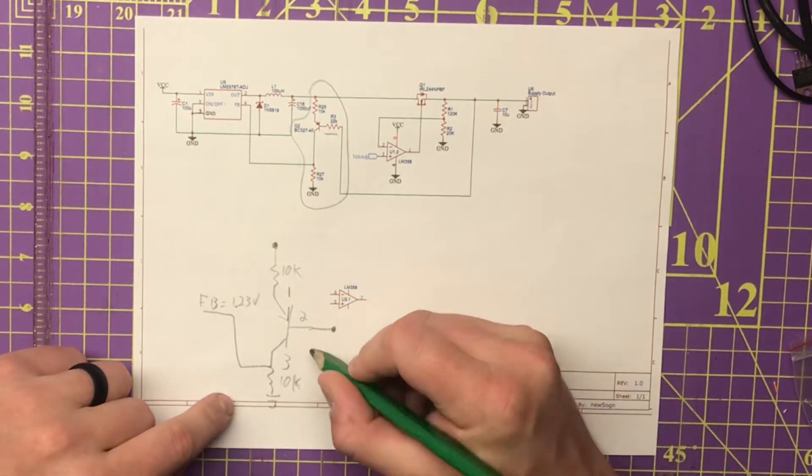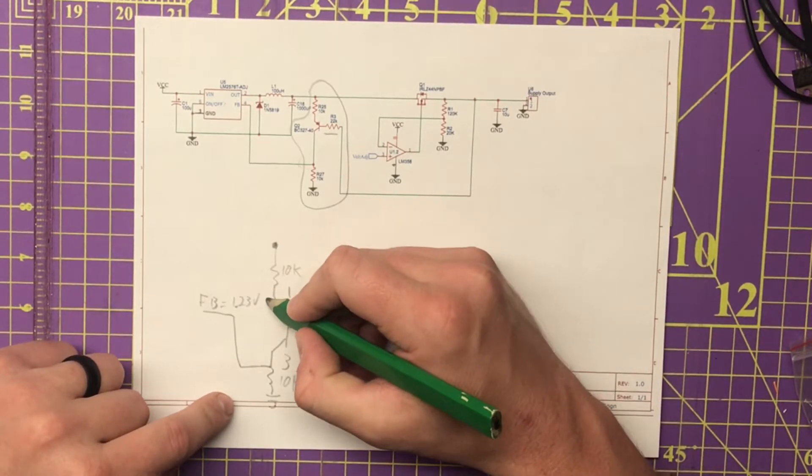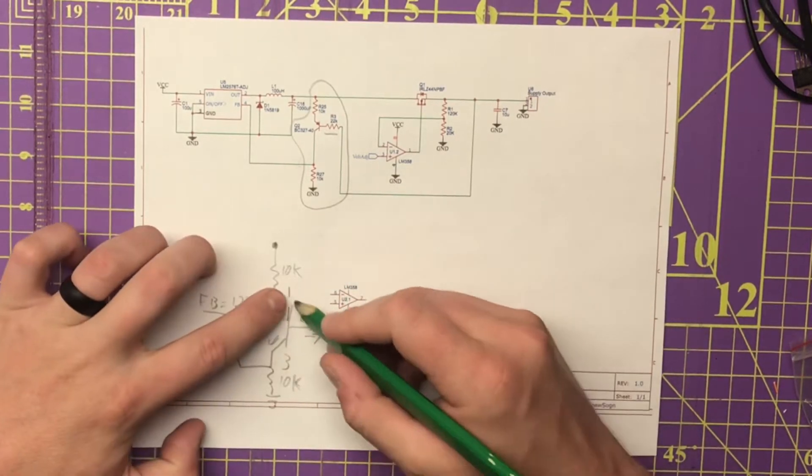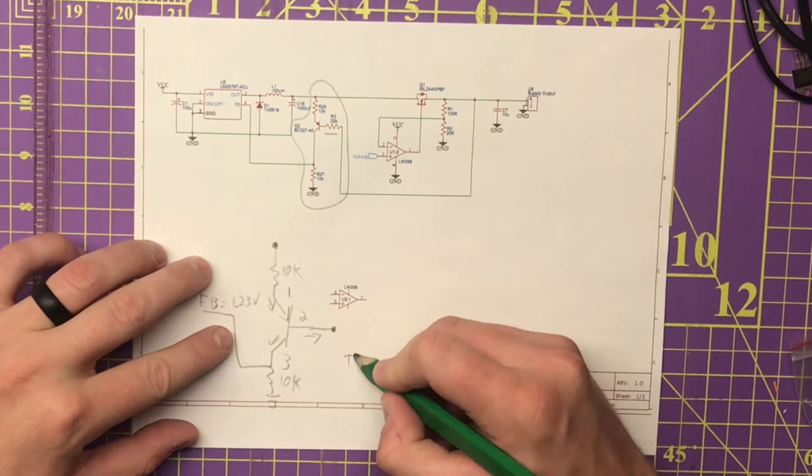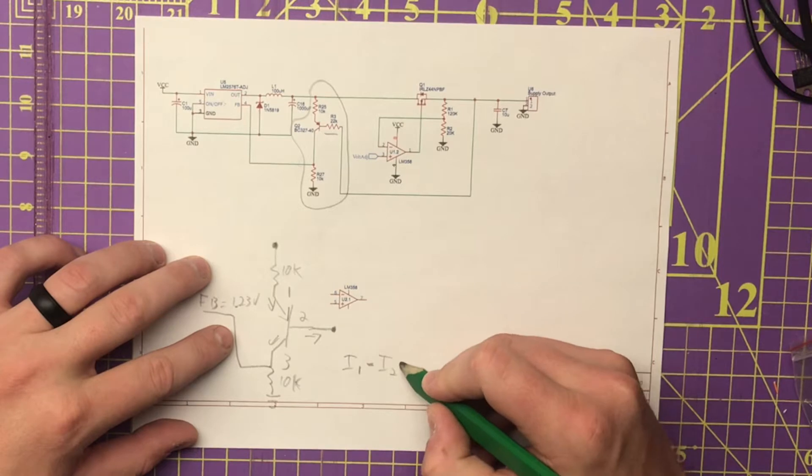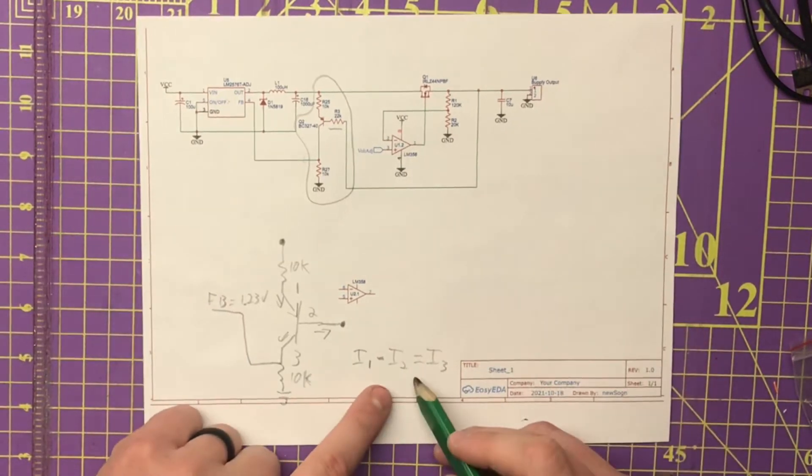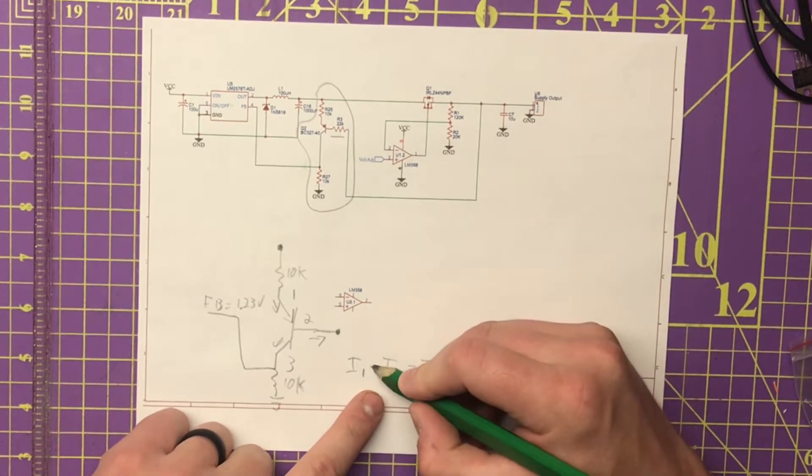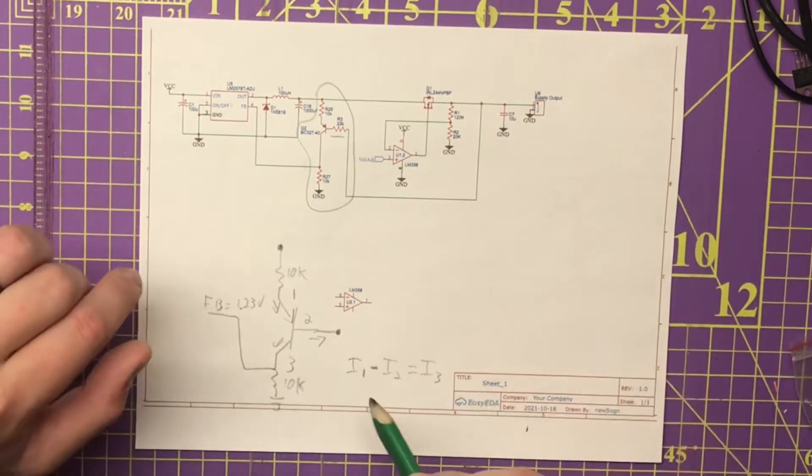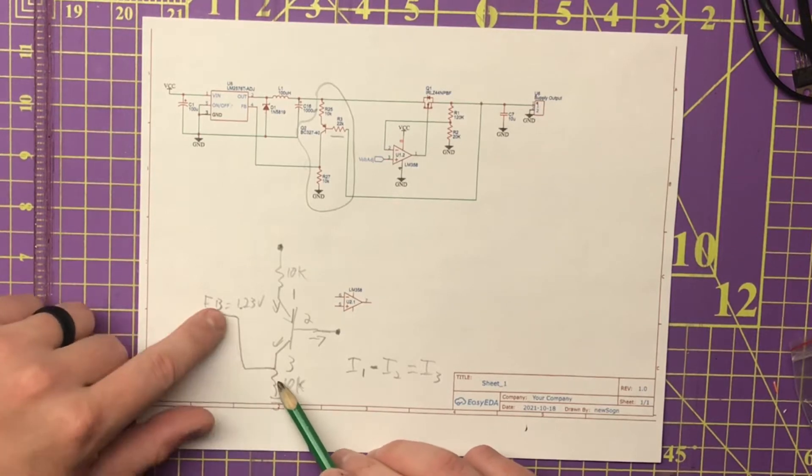I think that then current can flow this way, which would allow current to flow this way and this way, because if you remember one, two, three: I1 minus I2 is equal to I3. That should be the current calculations of a PNP BJT.